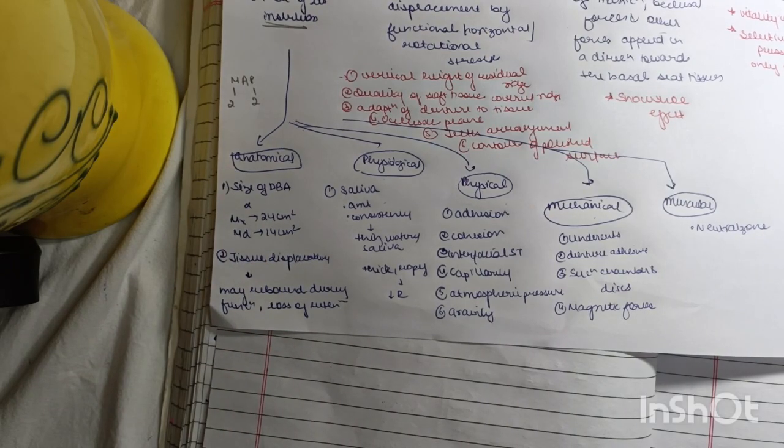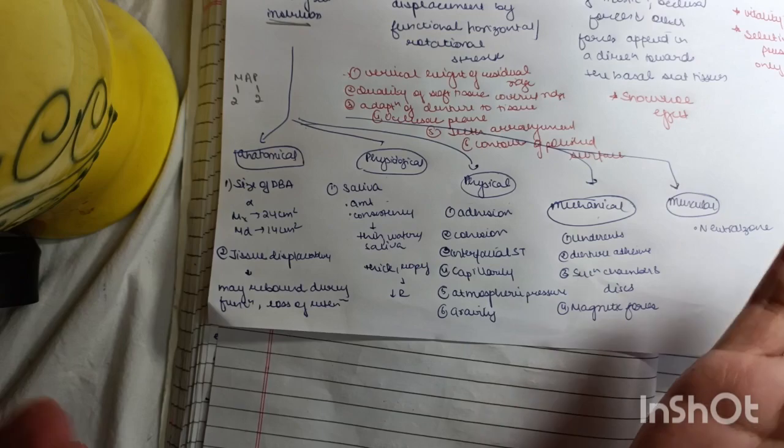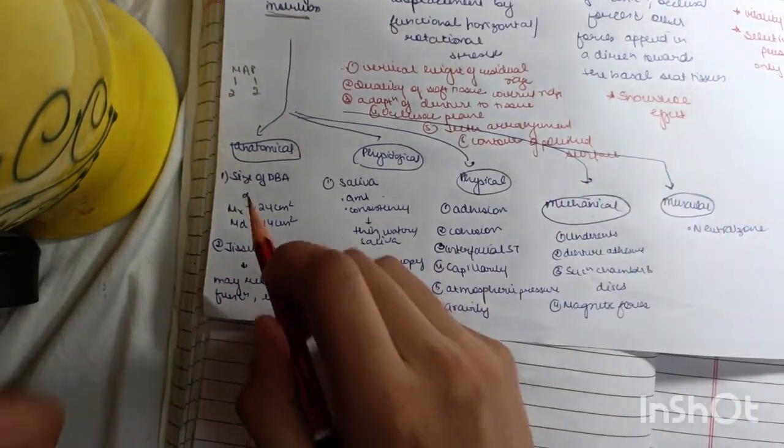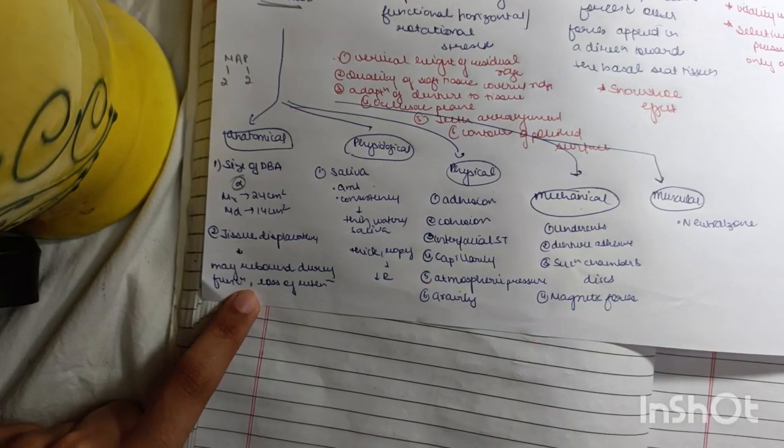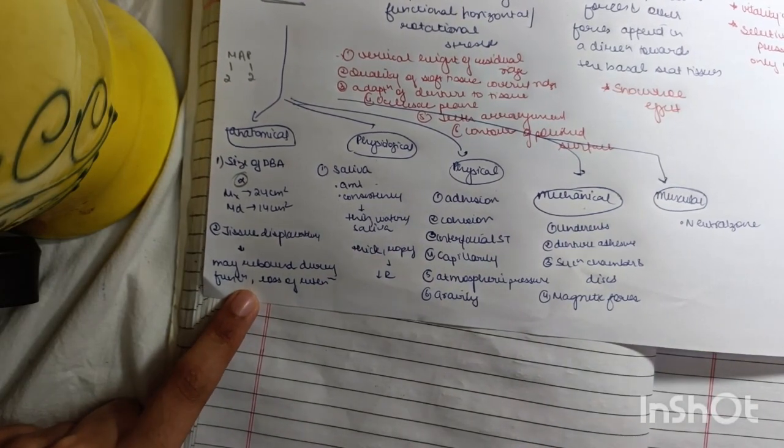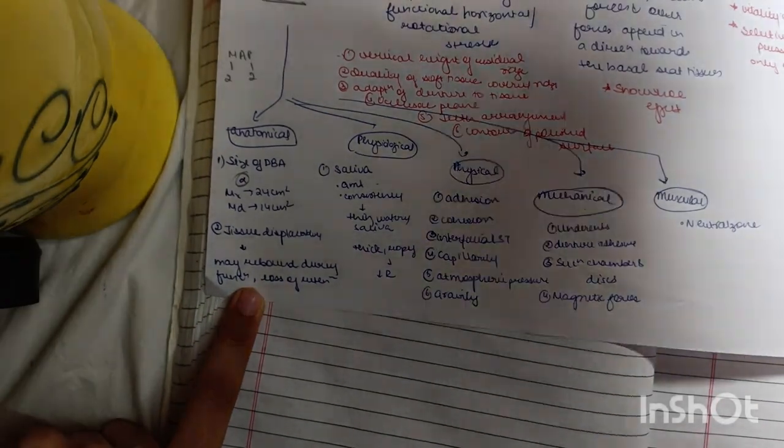It should cover maximum area so that more retention is present—directly proportional. Then tissue displacability: if the tissue is highly resilient it will bounce back, it will rebound during function, and this will lead to the loss of retention.